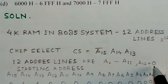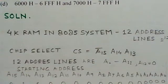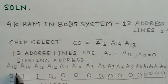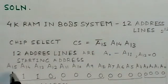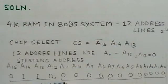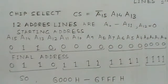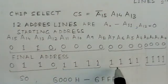Taking A12 as 0 gives one address range, and taking A12 as 1 gives another address range. For the 16-bit address, we have A15, A14, A13 down to A0. We know A15 is 0, A14 and A13 are 1, and A12 is taken as 0. The lower bits A11 to A0 go from all zeros for the starting address to all ones for the final address.